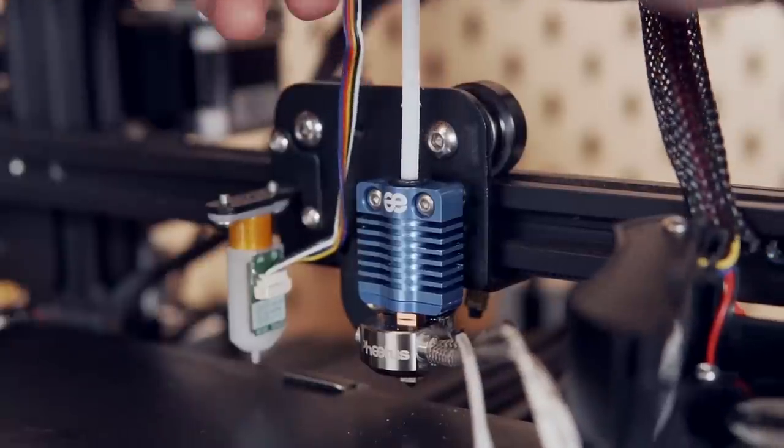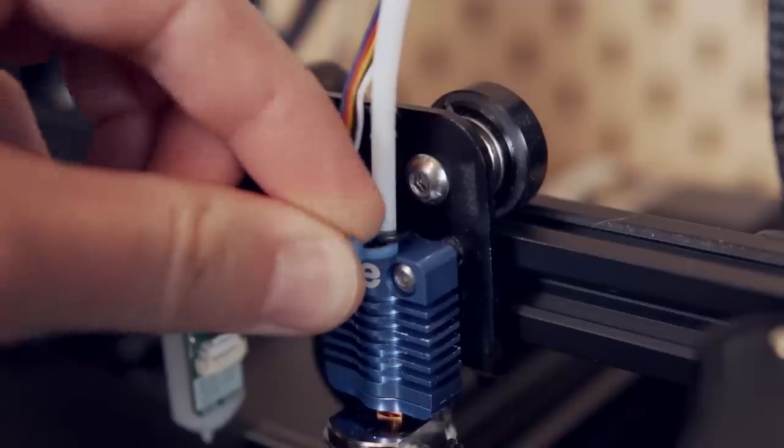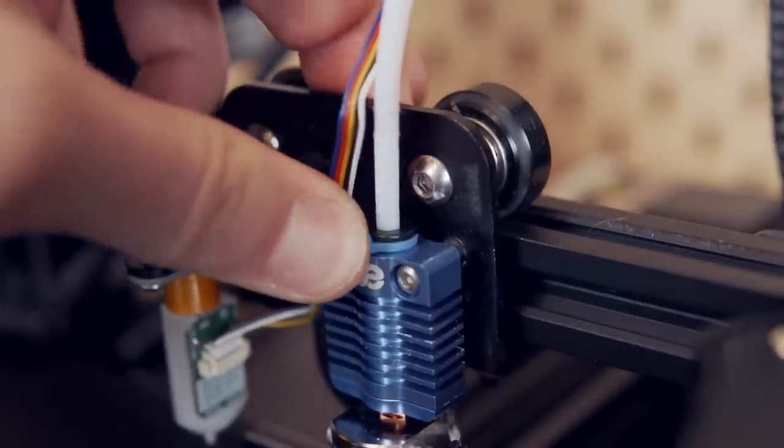Once secured, take the bowden tube and push it into the top of the hotend and grab the blue retaining clip to make sure it's locked in place.